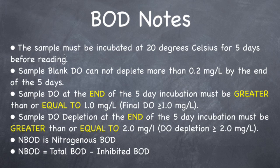The sample must be incubated at 20 degrees Celsius for 5 days before reading. You read an initial DO, incubate for 5 days, and then you read a final DO. And that's the DO depletion that you're going to be using in your BOD. You also have a sample blank.